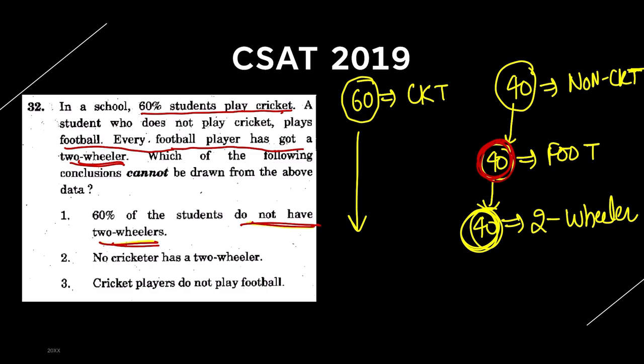The first statement says 60% of students do not have a two-wheeler. We don't know this — the cricket players could or could not have two-wheelers. The second statement says no cricketer has a two-wheeler. Again, we don't know, since we were only given information about football players. Think of it like saying the 2020 World Cup team all have cars — that says nothing about another team. So the first statement cannot be validly concluded from the given data.